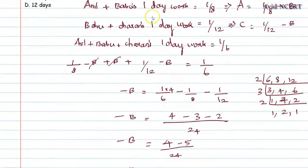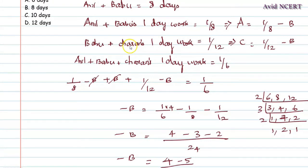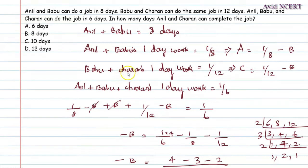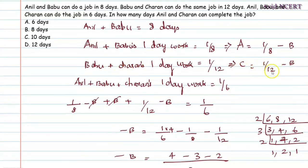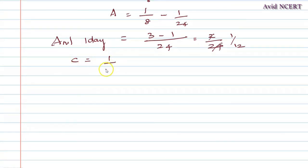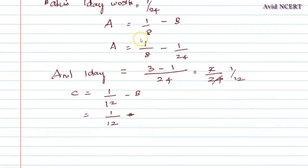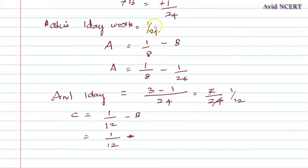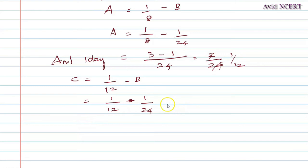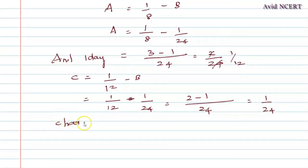Now substituting the value into the second equation, we can find Charan's value. B plus C equals 1/12, therefore C equals 1/12 minus B. We know Babu's one-day work is 1/24, so C equals 1/12 minus 1/24. With LCM 24, this is 2 minus 1 = 1, divided by 24. So Charan's one-day work equals 1/24.